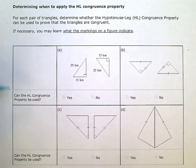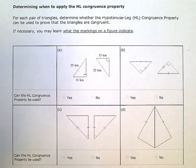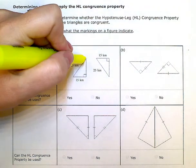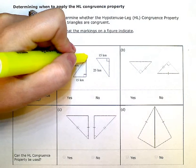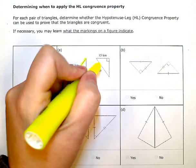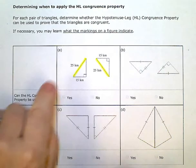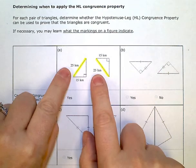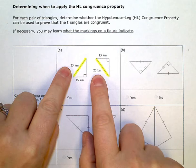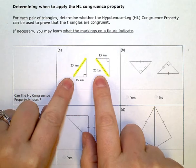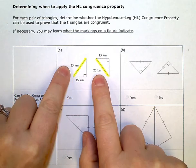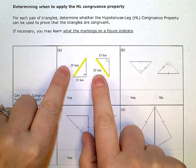I need to look at the hypotenuse and the legs. The hypotenuse is always the one directly across from the right angle. In this first pair, the highlighted sides are the hypotenuse of each triangle, and I can see that they are the same length — they're both 25 kilometers long.